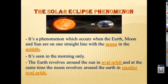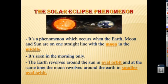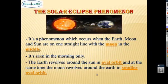The solar eclipse phenomenon occurs when the earth, moon, and sun are on one straight line with the moon in the middle. As we know, the earth revolves around the sun in an oval orbit, and at the same time, the moon revolves around the earth in a smaller oval orbit.